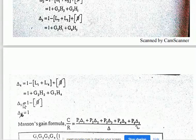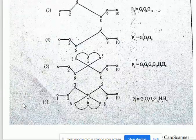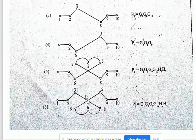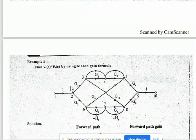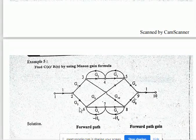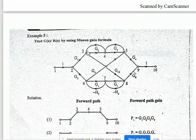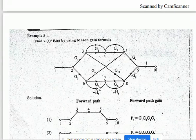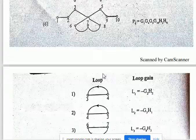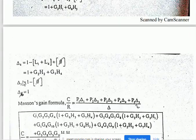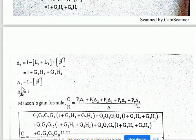For Delta 5, the fifth forward path is 1→2→6→5→4→3→8→9→10. All loops are touching this path — every node is contacted. Similarly for the sixth forward path (Delta 6). Therefore Delta 5 = 1 and Delta 6 = 1, because all loops are attached to those forward paths.